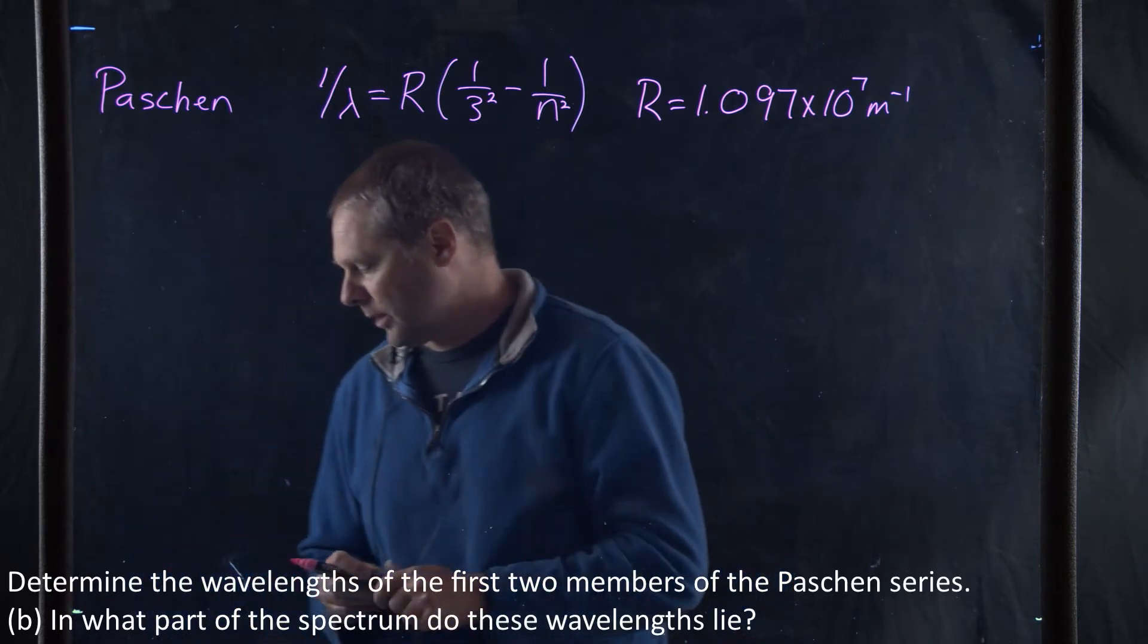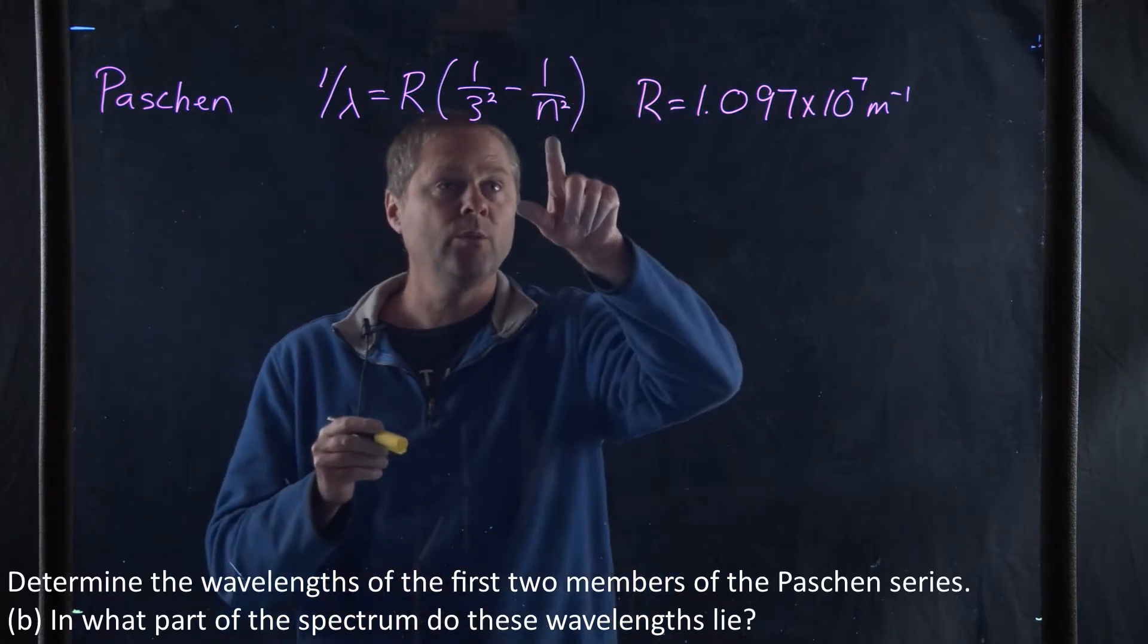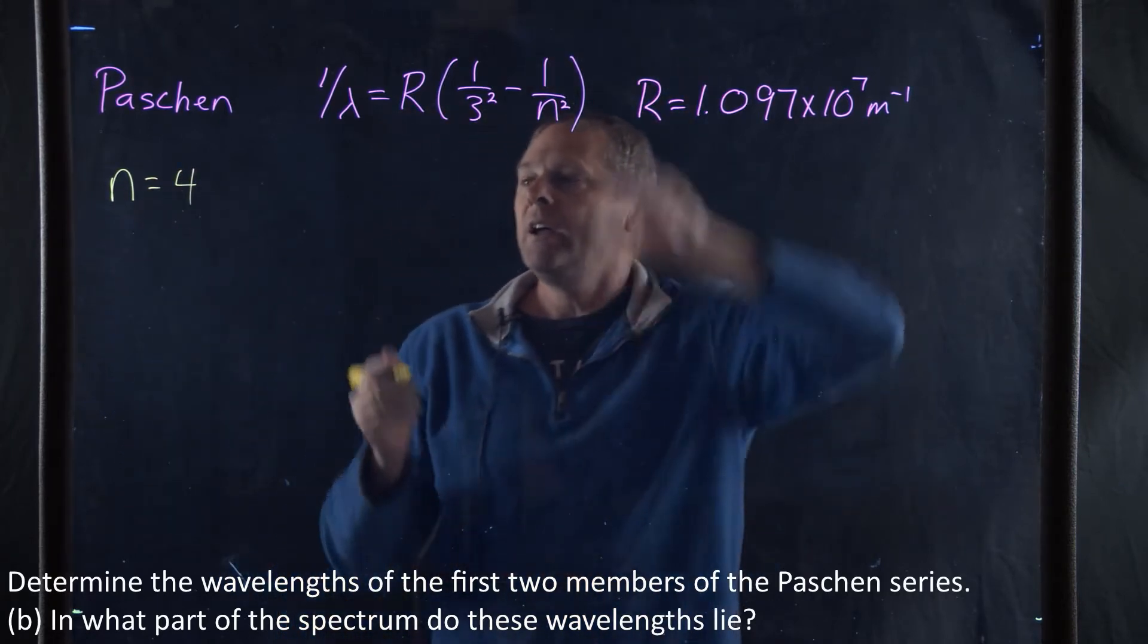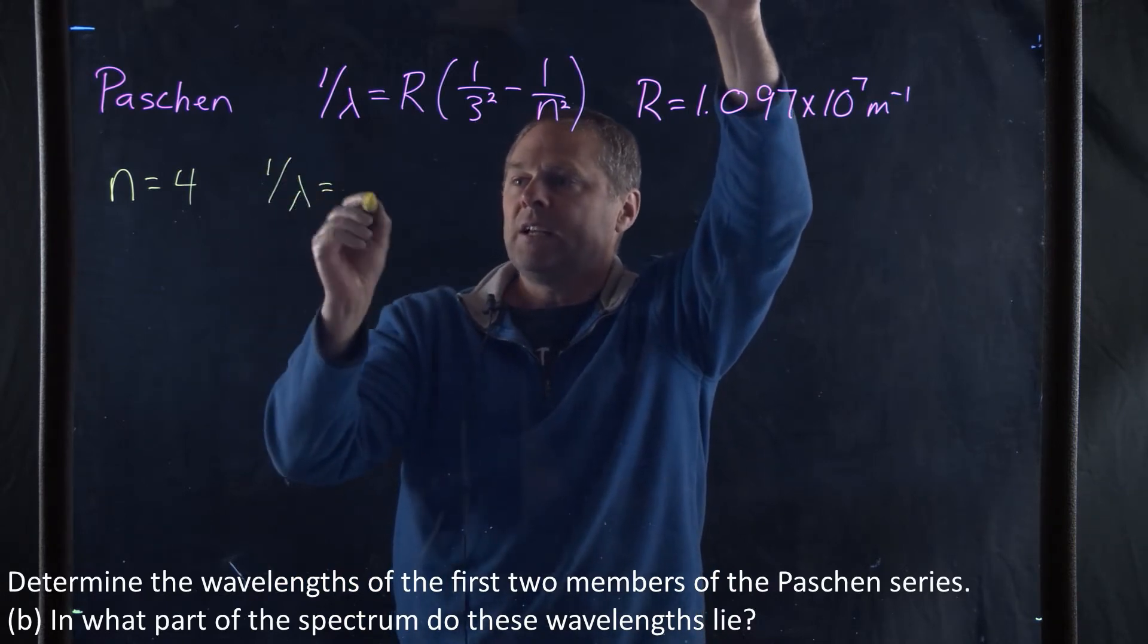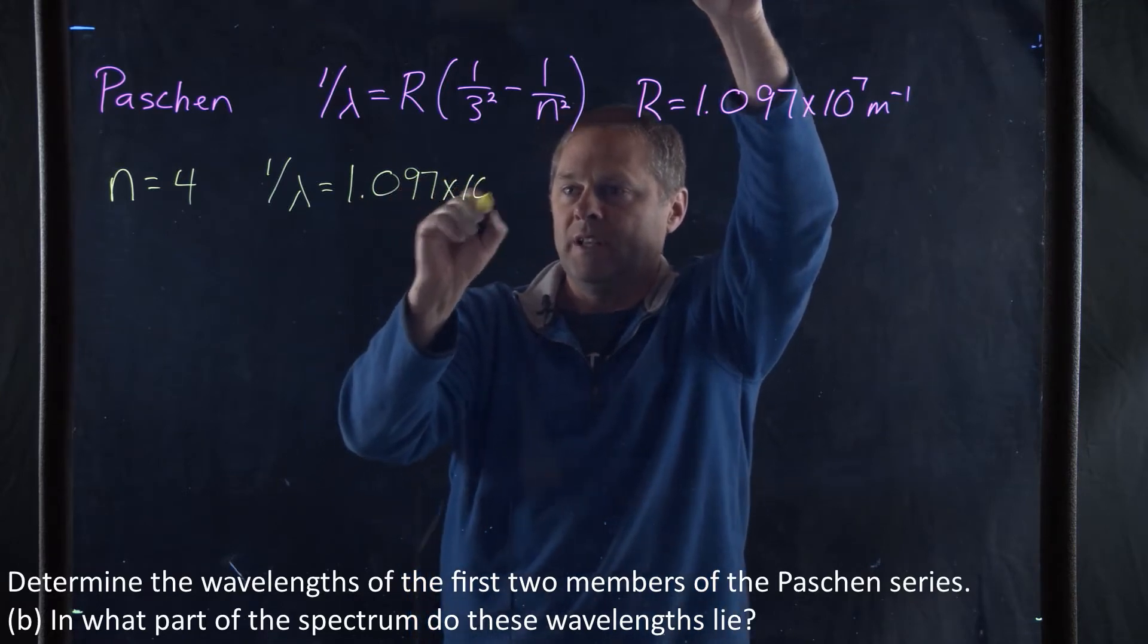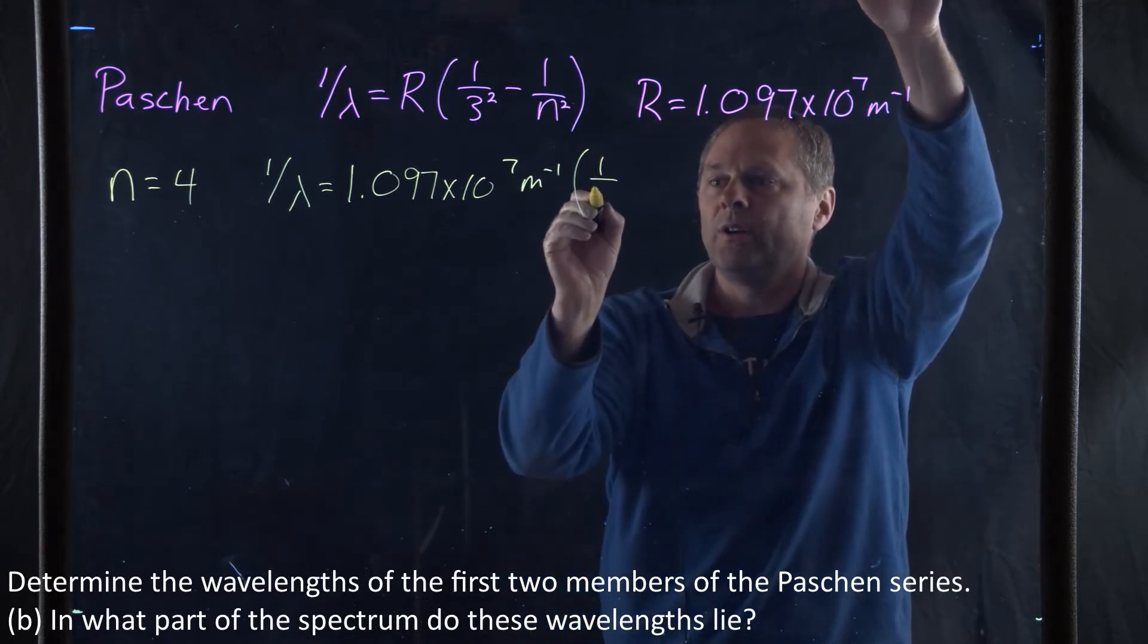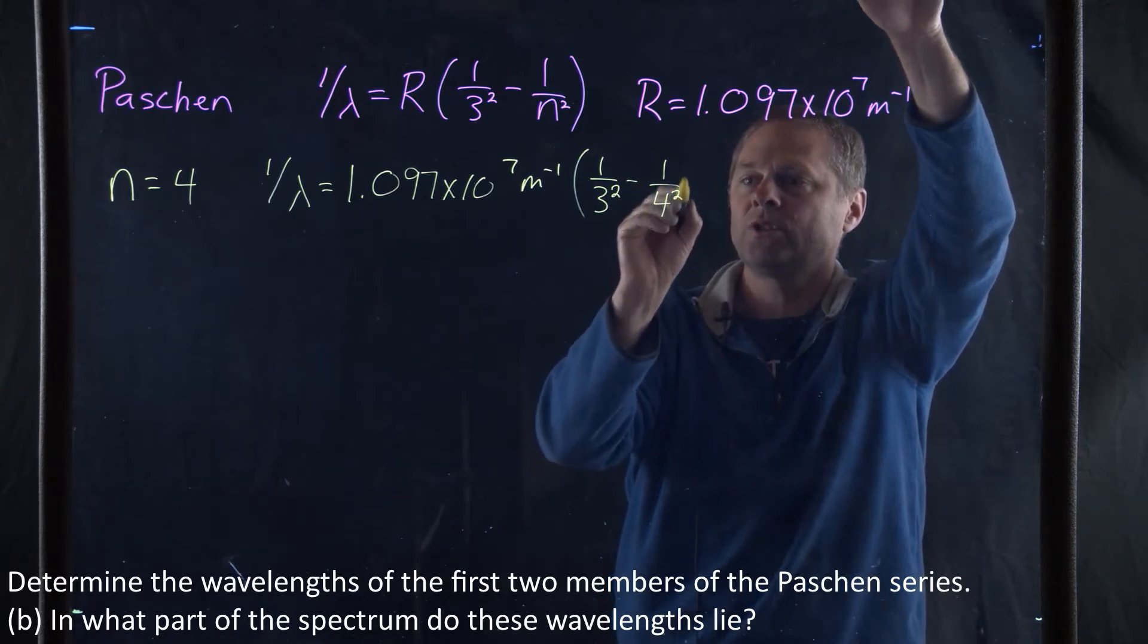If we're looking at the first member, then n is going to be equal to 4. So we have 1 over lambda equals 1.097 times 10 to the seventh inverse meter times 1 over 3 squared minus 1 over 4 squared.